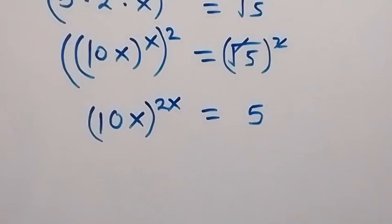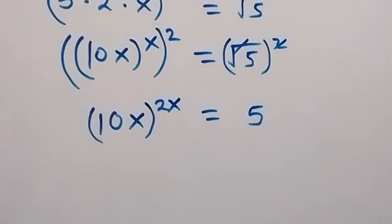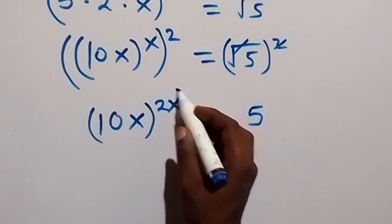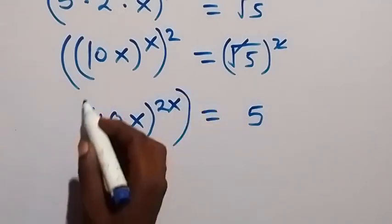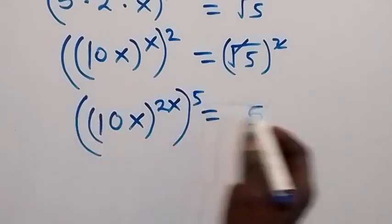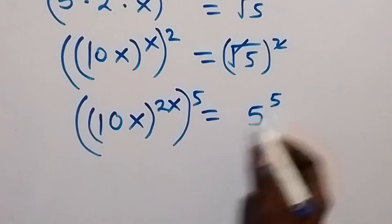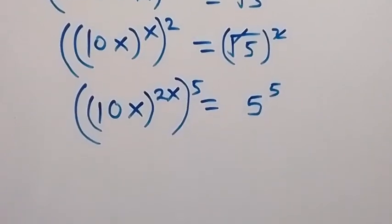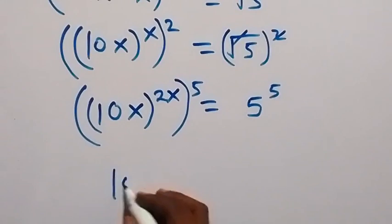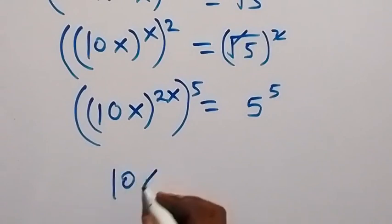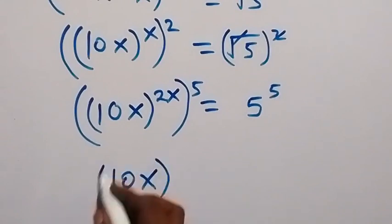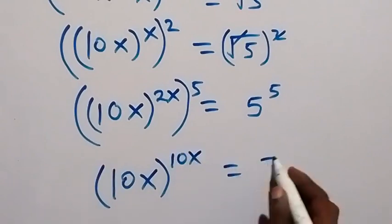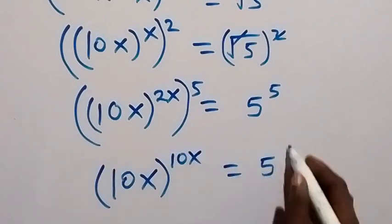Then also from here, let's raise both sides to power 5. So we raise both sides to power 5. This power multiplies as well and this becomes 10x raised to power 10x, equals to 5 raised to power 5.